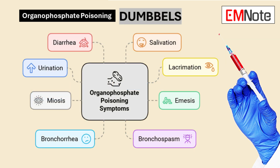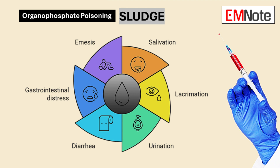Remember these two memory aids. First, DUMBLS, which stands for Diarrhea, Urination, Miosis, Bronchorrhea, Bradycardia, Emesis, Lacrimation, and Salivation. Second, SLUDGE, which stands for Salivation, Lacrimation, Urination, Defecation, and Emesis. These help in recognizing muscarinic symptoms.